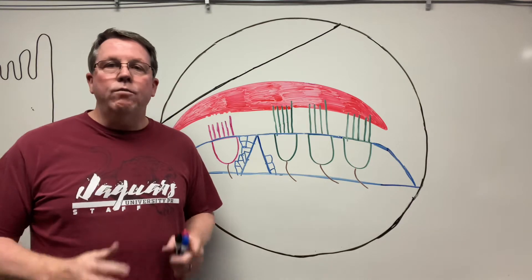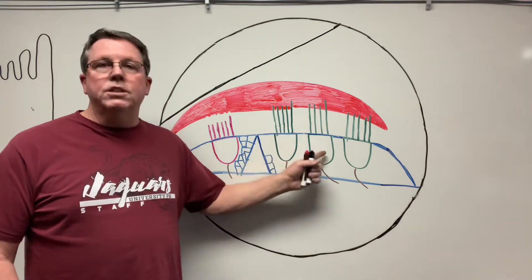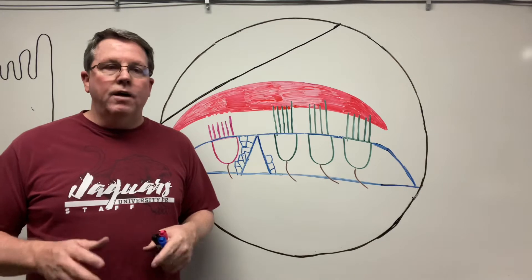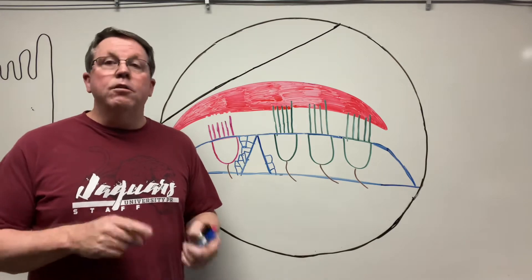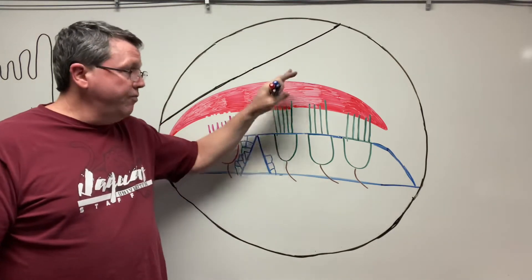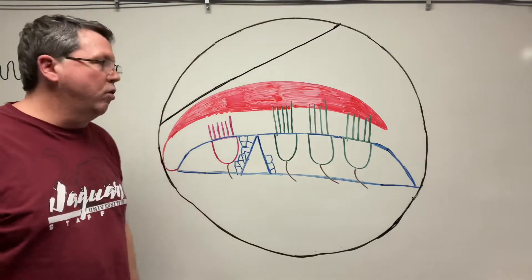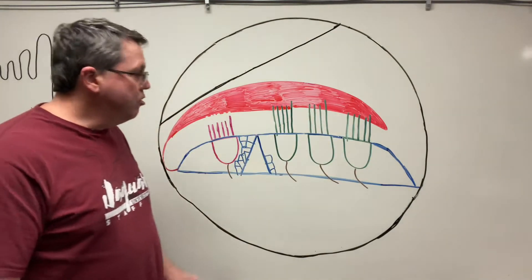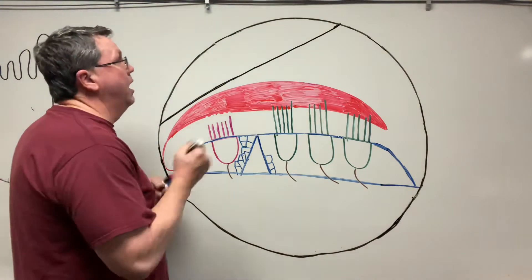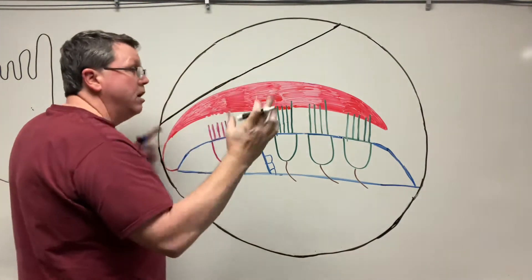Hi everybody. Today we're going to be talking about the organ of Corti, which is this structure right here. I've already done a video on the external ear, the middle ear, as well as the cochlea, and as I said, this video we're going to concentrate more on the organ of Corti. So before we get started, let's just reorient ourselves on some of the different parts.